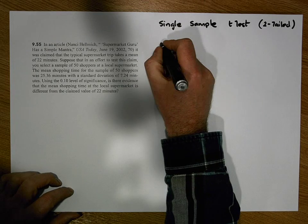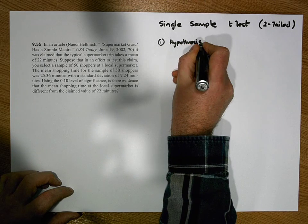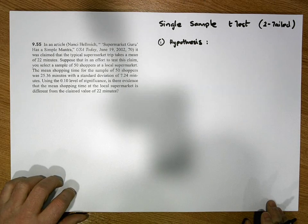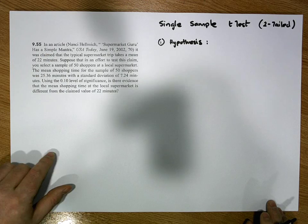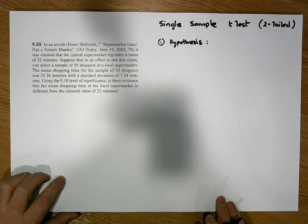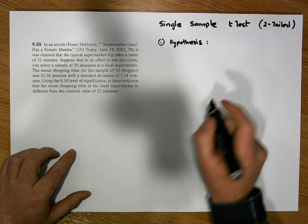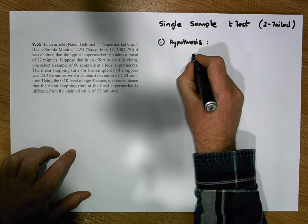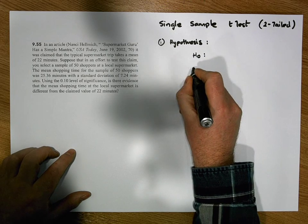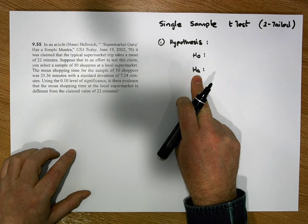For every hypothesis test that we perform there are five stages. Stage one is where we define our hypothesis — a statement about the population parameter. In this case we're talking about average trip times, so the hypothesis is a statement about the population mean. There are two positions we can take: the null position H₀ and the alternative position Hₐ.